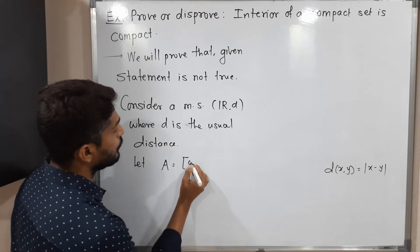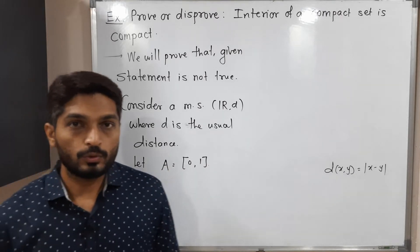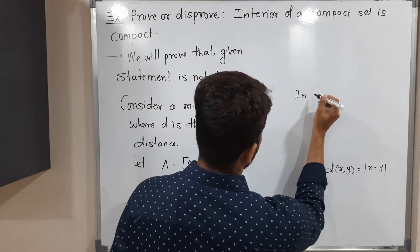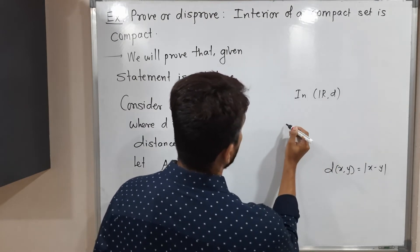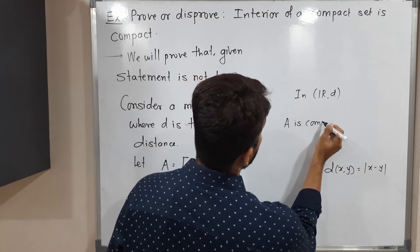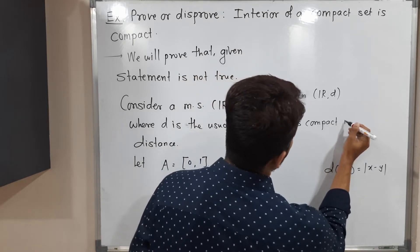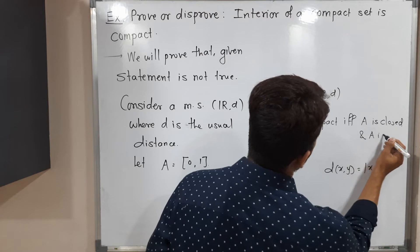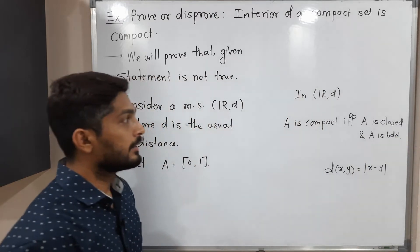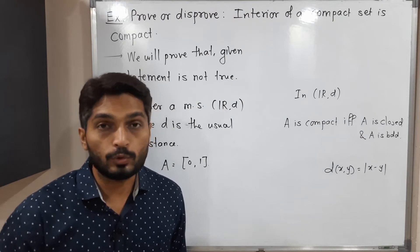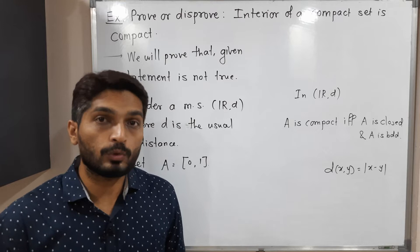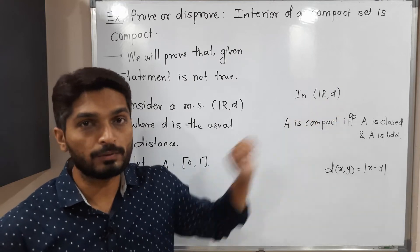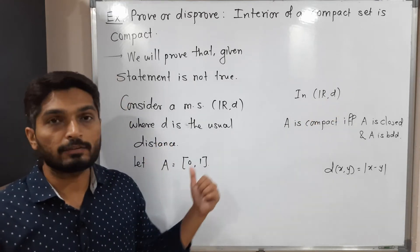Let A equal the closed interval [0, 1]. We should recall one result: in R^d where d is the usual distance, a set A is compact if and only if A is closed and A is bounded. So if a set is closed and bounded then it is compact. This result holds for R with the usual distance, and we can use it here.